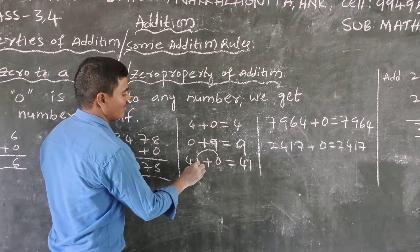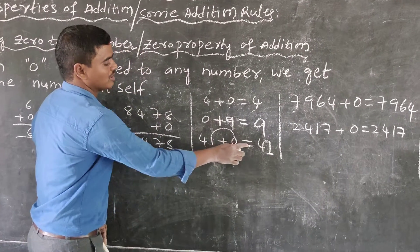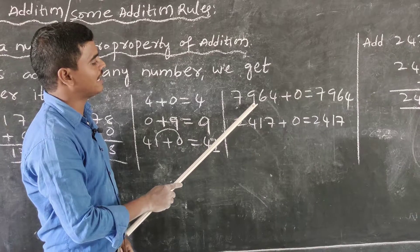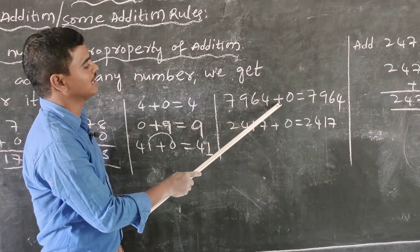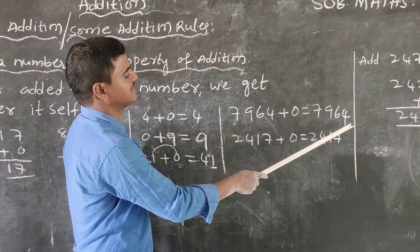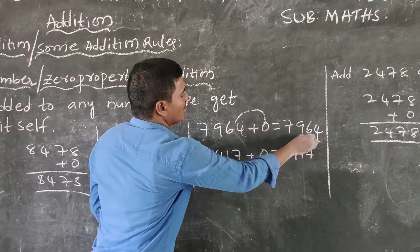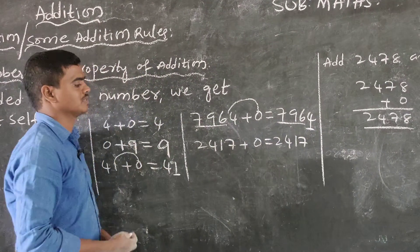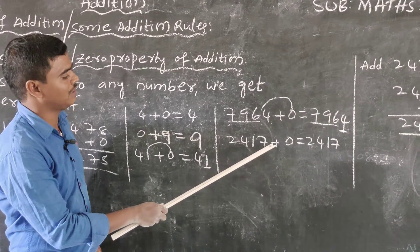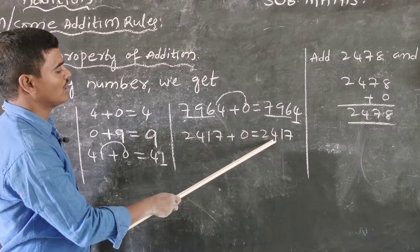In the ones place, 1 plus 0 is equal to 1, so 41 plus 0 is equal to 41. Next: 7,964 plus 0 is equal to 7,964. Starting from the ones place, 4 plus 0 is equal to 4, and the remaining digits stay the same.